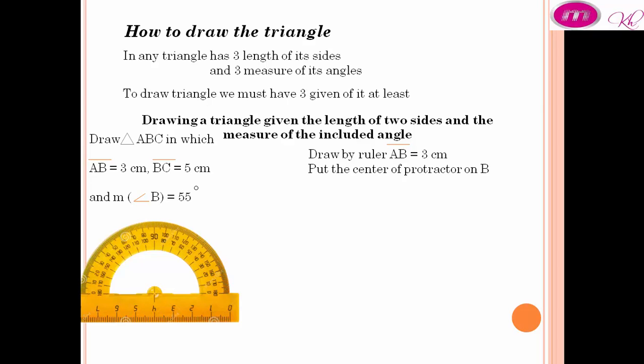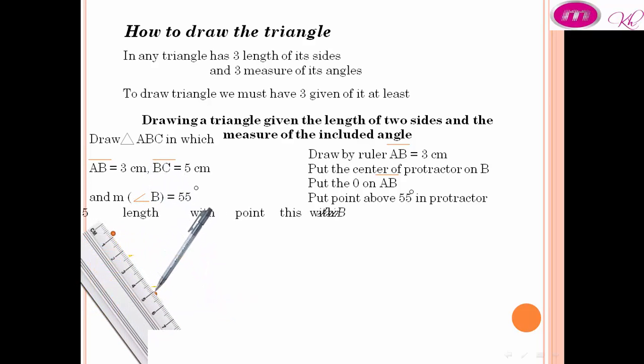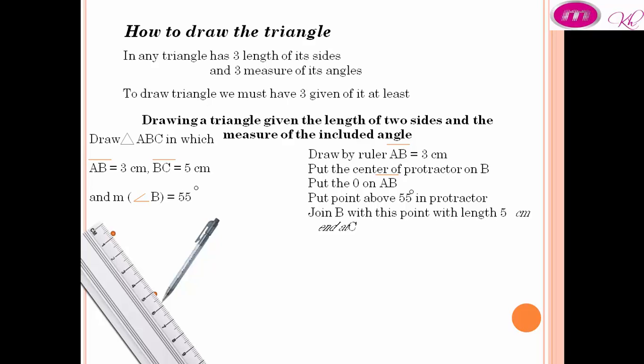Put the center of protractor on B. Put the zero in protractor on AB. Put point above 55 degrees in protractor. Join B with the point with length 5 centimeters and end at C.